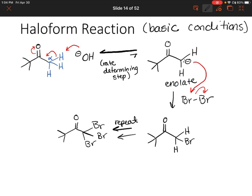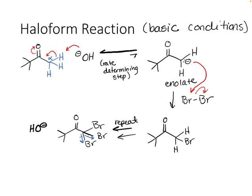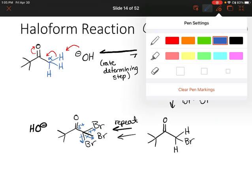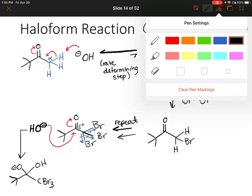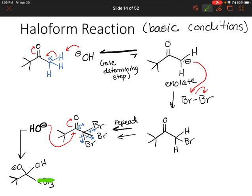Because we do have hydroxide present, and we have three bromines all pulling electron density away from that carbonyl carbon, the hydroxide ion is going to act as a nucleophile and attack that really positively charged carbon on our carbonyl group. So now we have a negatively charged oxygen, an OH group, a tert-butyl group, and CBr3.